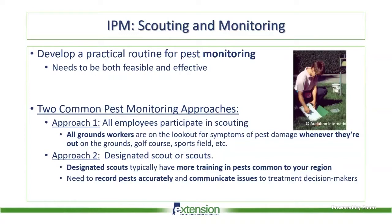There are two common approaches to pest monitoring. One is where all employees participate in scouting. They may not be highly trained in identifying and diagnosing turfgrass issues, but they're at least eyes on the ground looking for anything suspicious in terms of pest damage whenever they're out on the grounds, golf course, or sports field. Approach two involves using a designated scout or scouts who typically have more training in pests common to your region. They need to record pests accurately, provide all essential information, and communicate any issues to those treatment decision makers, such as a golf course superintendent.